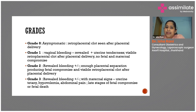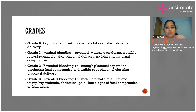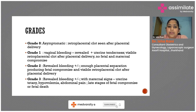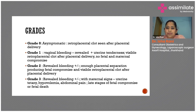Grade 0 is asymptomatic — the patient does not have any symptoms throughout the pregnancy, but at the time of delivery, a retroplacental clot is seen after placental delivery. Grade 1 is when the patient presents with vaginal bleeding and uterine tenderness, but there is no fetal or maternal compromise.